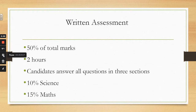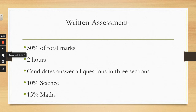Part two of the GCSE: 50 percent of your total mark will go towards a written exam. The written exam will be two hours long. All candidates will need to answer all three sections. 10 percent of the exam will be science-based and 15 percent will be maths-based, and the rest will be for Design Technology.